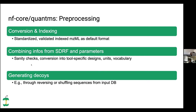In pre-processing, we convert and index all spectra. The default format will be MZML — so everything else will be converted into MZML. We combine information from the SDRF and the Nextflow parameters. We do some sanity checks and convert designs and vocabulary for specific tools. Regarding the database, we can also generate the decoys for you — usually done by reversing or shuffling sequences in the database.